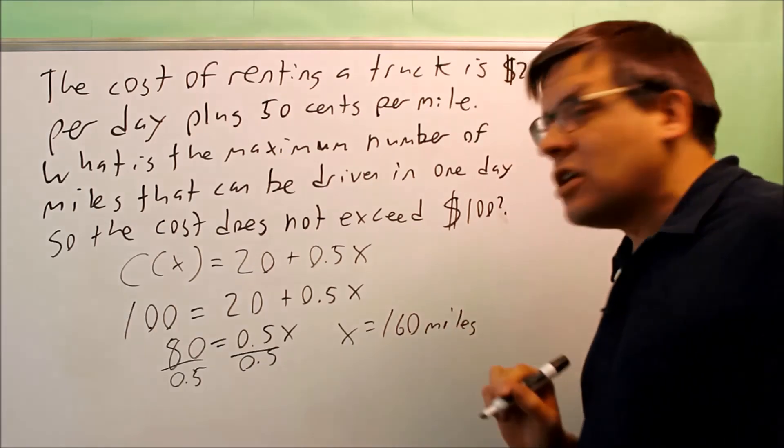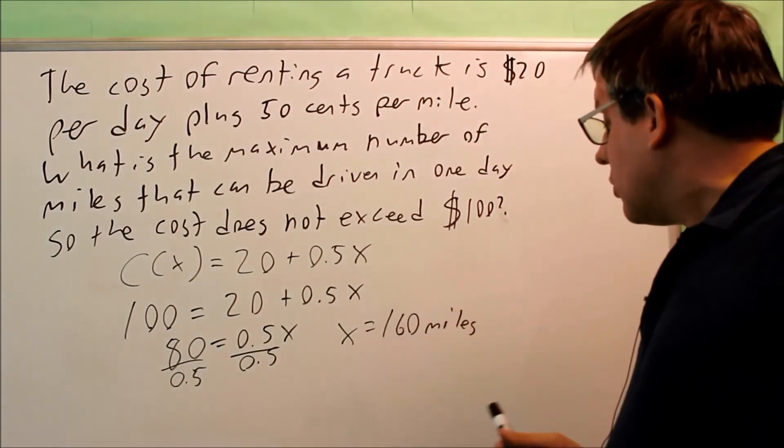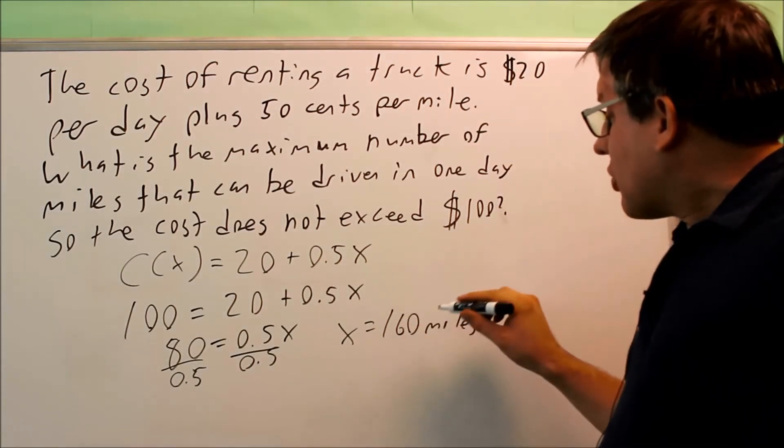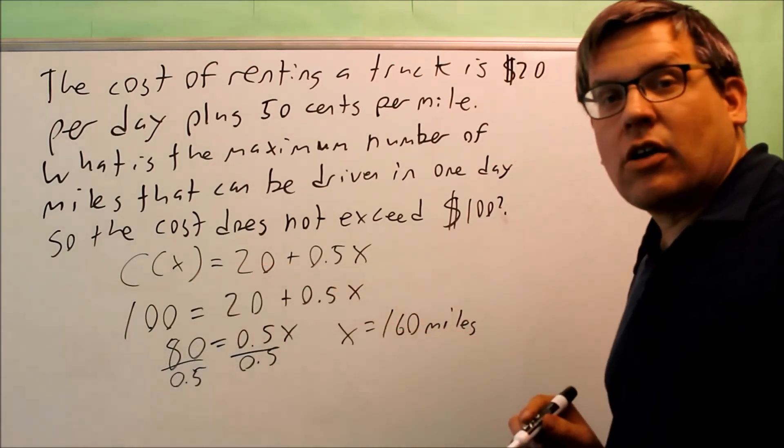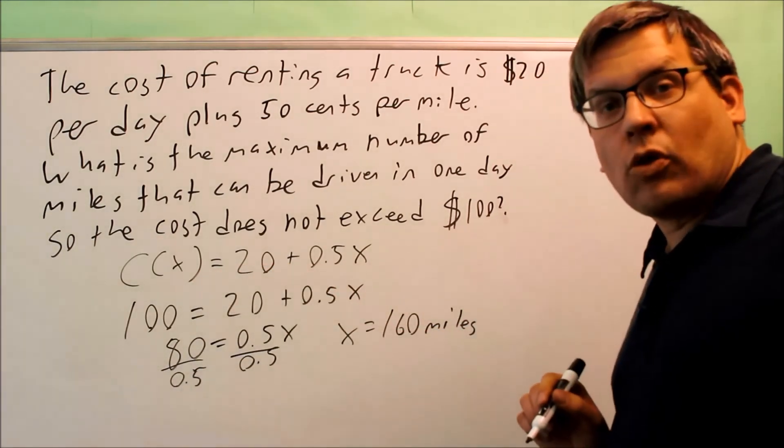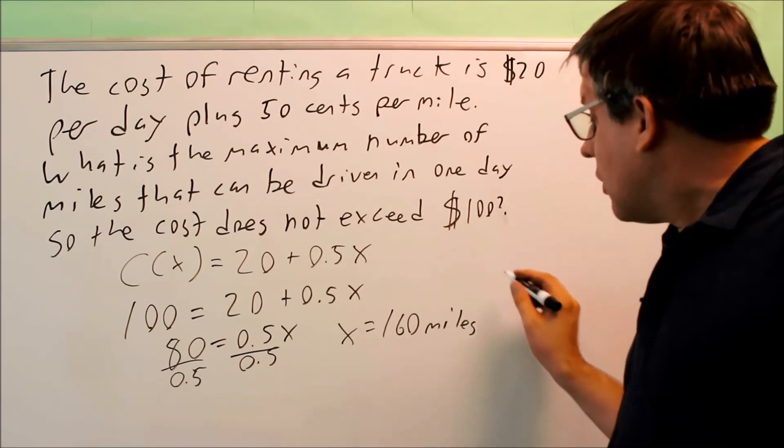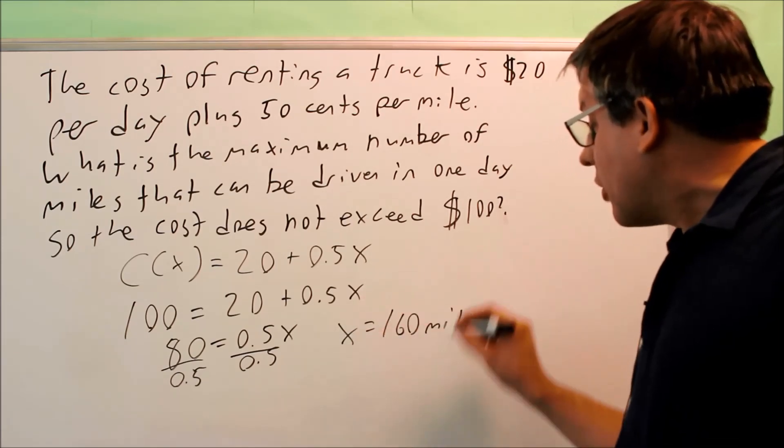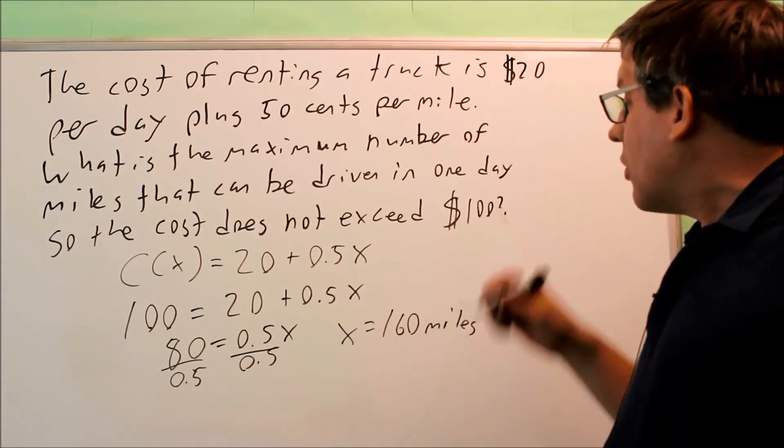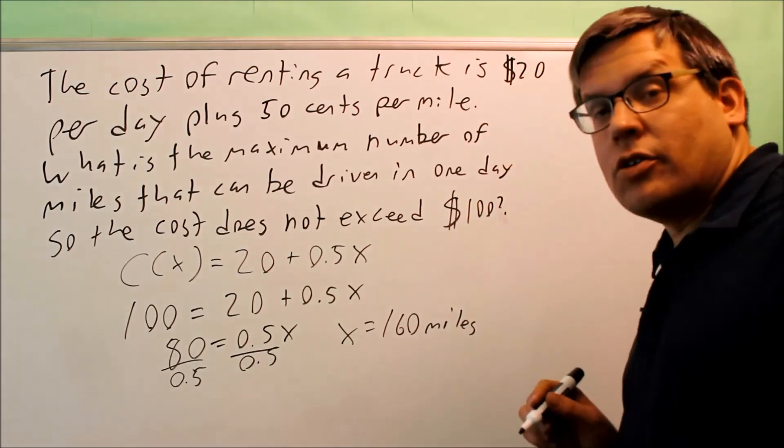So 160 would be the most miles that you could go. 160 would give you a cost of exactly $100, so if I go any more than that, that means my cost will be more than 100. So I just want to make sure it's 160 or less. That guarantees that I'm not going to go over $100.